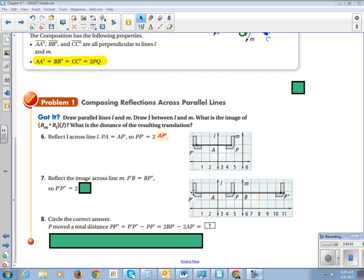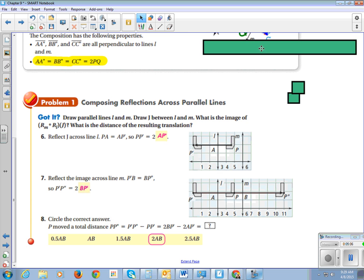Then we're going to reflect the image across line M. So here we are. We're going to reflect it across line M. So we're going to take this distance from P to P prime and put it all the way on the other side of M, which is two BP prime. Then, so P moved a total distance of two times AB. Because it moved AB and then a little bit more and then all the way back over, it is from its original point to its resting point, two times AB.